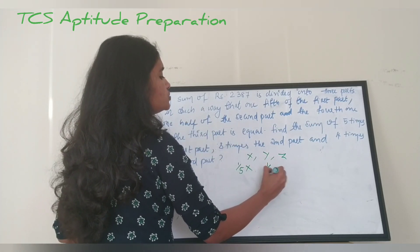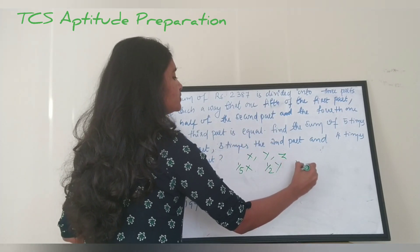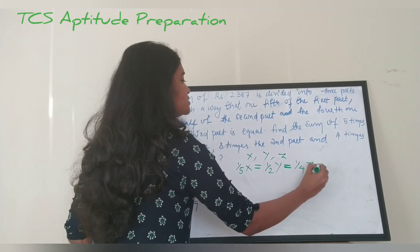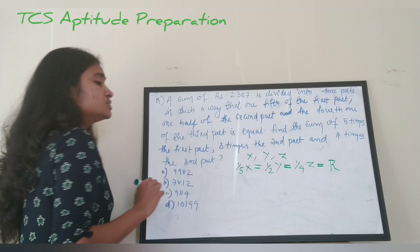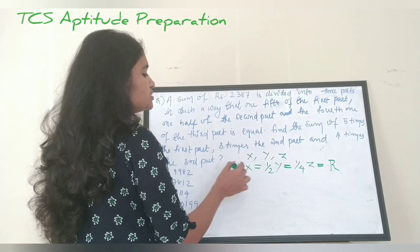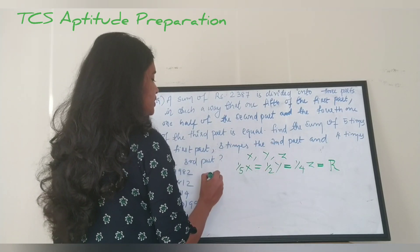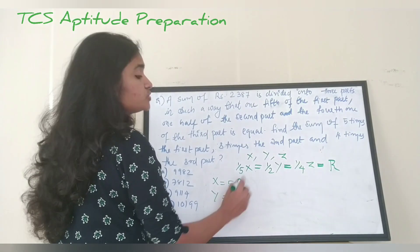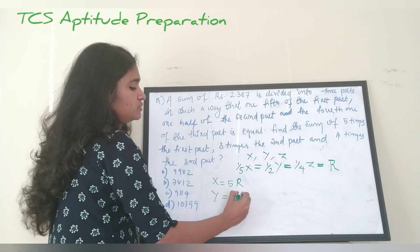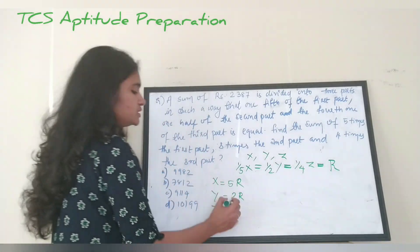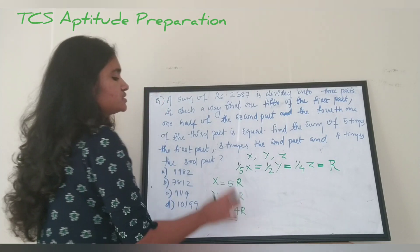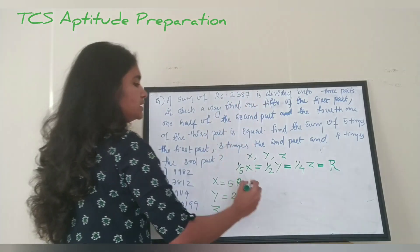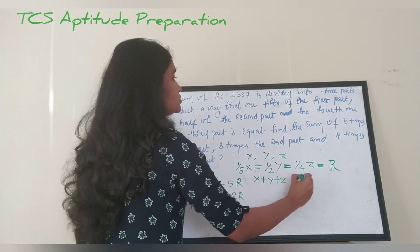From the condition, one-fifth of x equals one-half of y equals one-fourth of z. Let this common value be r. Then x equals 5r, y equals 2r, and z equals 4r. The total sum x plus y plus z equals 2387, so we write 5r plus 2r plus 4r equals 2387.